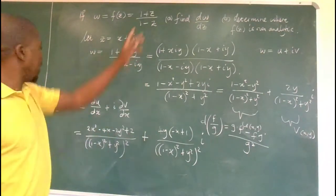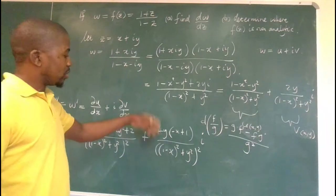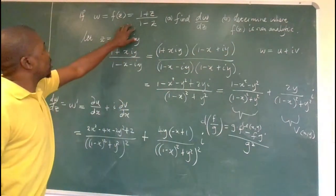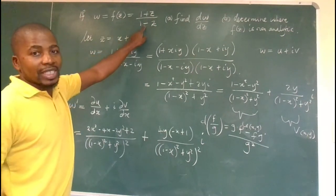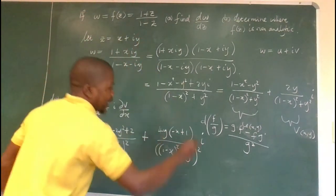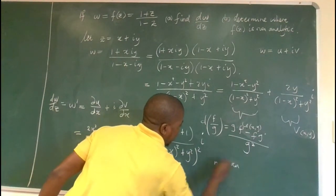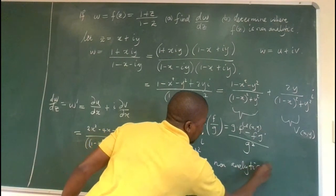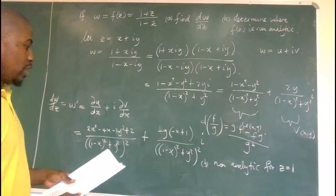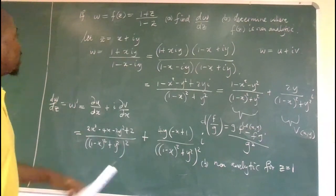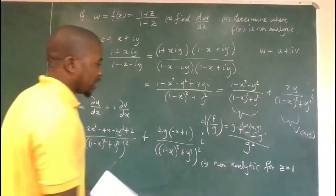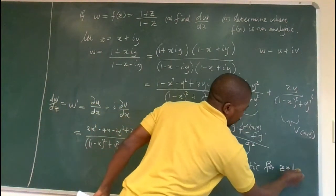That's part (a) — you can leave the answer in that form; it can't be simplified further and it is correct. For part (b), the function is non-analytic when the denominator is zero, because that makes the expression undefined. So the function is non-analytic at z = 1.